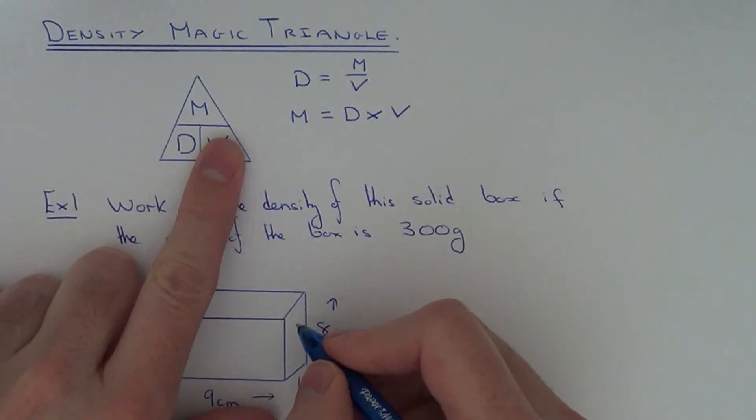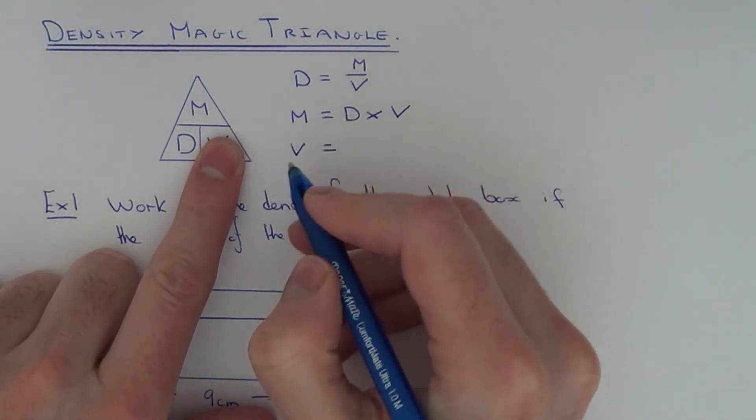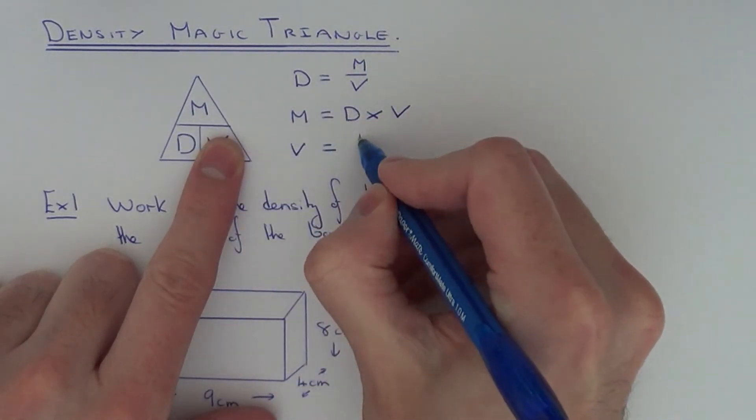If you needed to work out the volume of a shape, then you'd do mass divided by density.